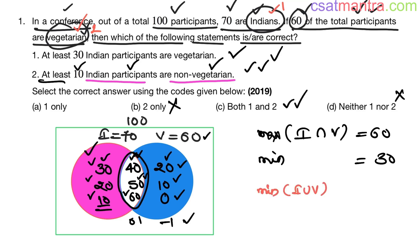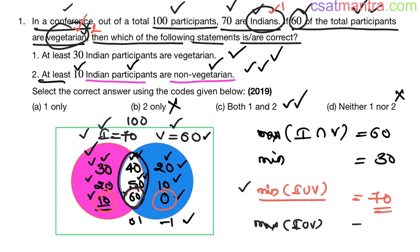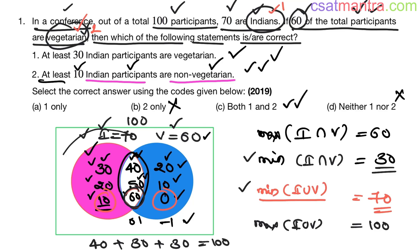So our answer is C — both statements are correct. The minimum value of I∪V is 70: when the vegetarian set lies completely inside the Indian set (10 + 60 + 0 = 70). The maximum value of I∪V is 100: when the minimum intersection is 30 and both circles completely fill the rectangle (40 + 30 + 30 = 100), meaning the two circles together cover the entire universal set.